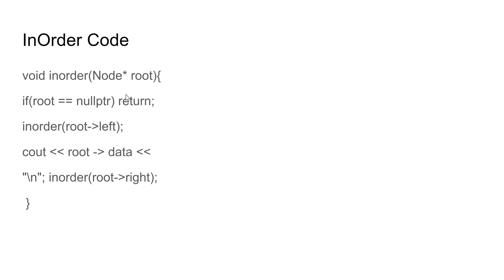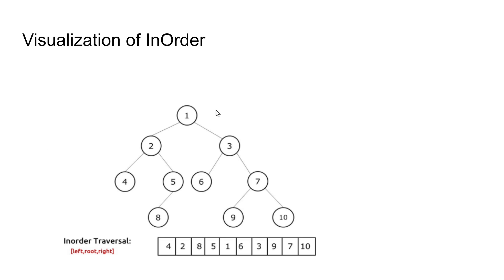Here's the code for in-order traversal. If root equals null pointer, return. Call in-order on root dot left, then cout root dot data, then call in-order on root dot right. Here's the visualization of in-order traversal.